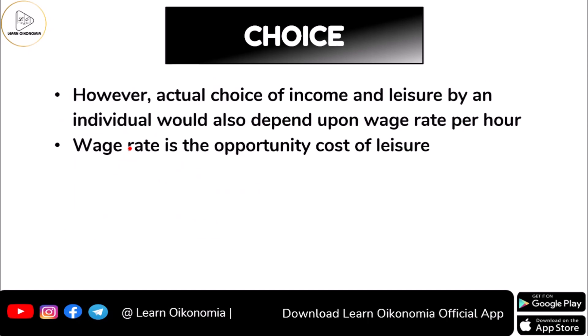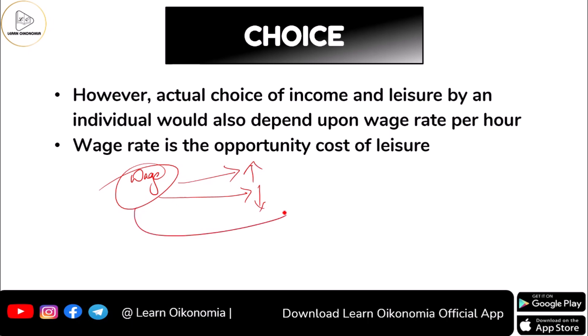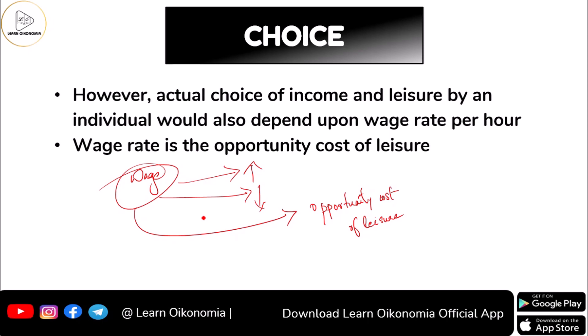In reality, the choice of income and leisure made by a person depends on a very important factor: the wage. The decision maker considers whether the wage is higher or lower. This wage is what we call the opportunity cost of leisure — because when you go for an extra hour of leisure, you are sacrificing your wage. The opportunity cost means the next best alternative that you are forgoing.